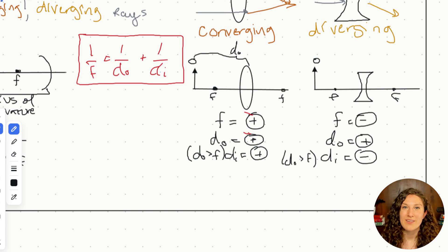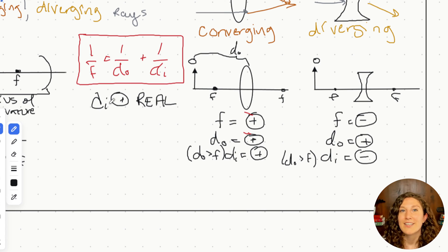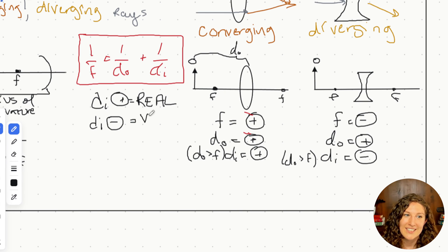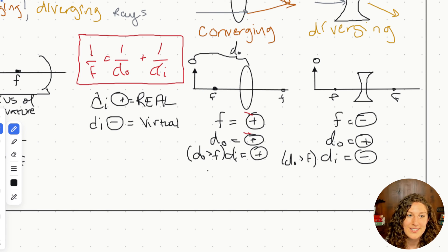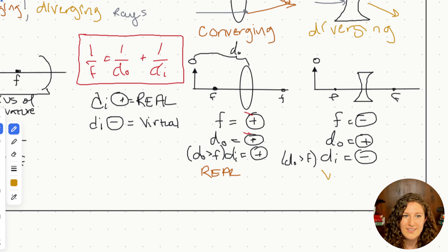Let's finish out this study guide with what types of images are formed with which type of lens. Here's our first set of rules: if DI is positive, this is a real image. Real and virtual are just terms we use to describe the types of images that are formed. For a positive image distance, that means it's a real image. For a negative image distance, that's a virtual image. So by definition, our convex converging lens produces real images, and our diverging lens by definition produces virtual images.